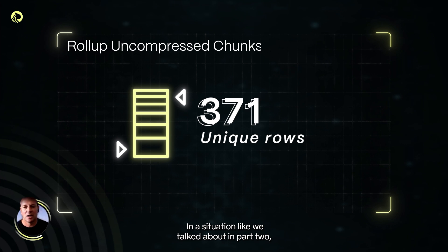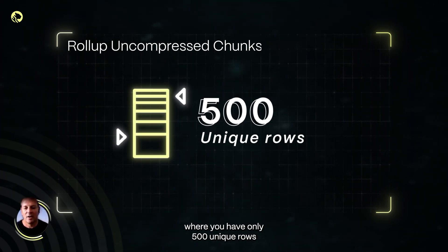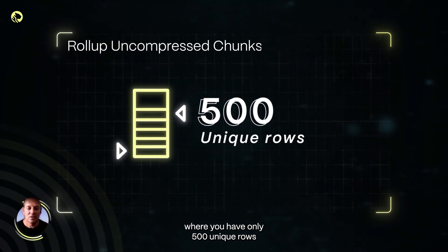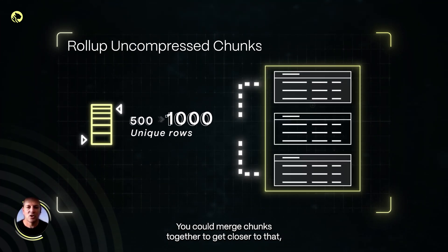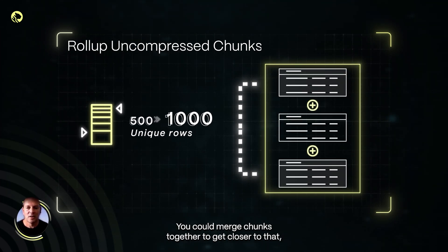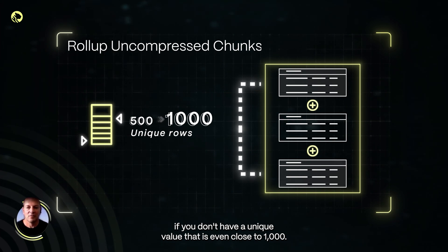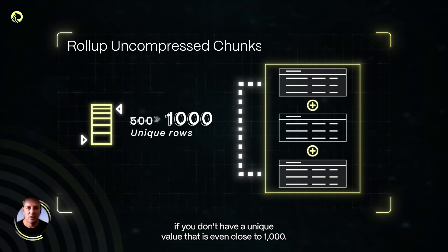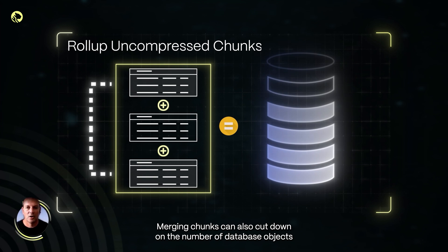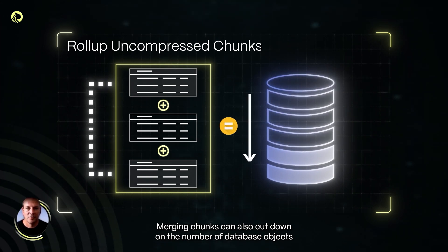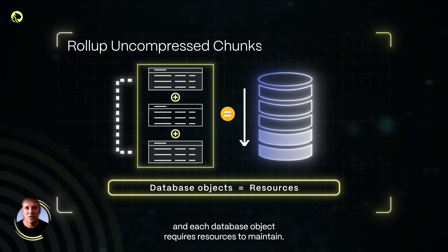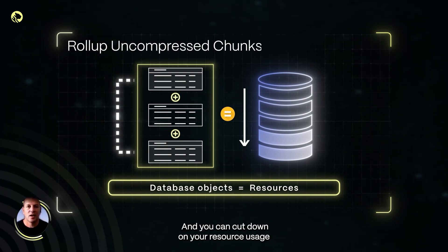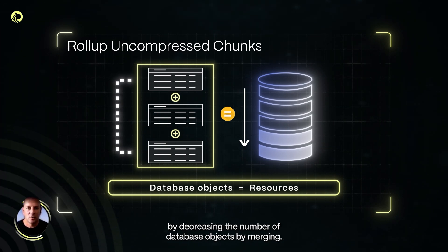In a situation like we talked about in part two, where you have only 500 unique rows and you're trying to get closer to that thousand-row bundle, you could merge chunks together to get closer to that if you don't have a unique value that is even close to 1000. Merging chunks can also cut down on the number of database objects, and each database object requires resources to maintain, so you can cut down on your resource usage by decreasing the number of database objects by merging.